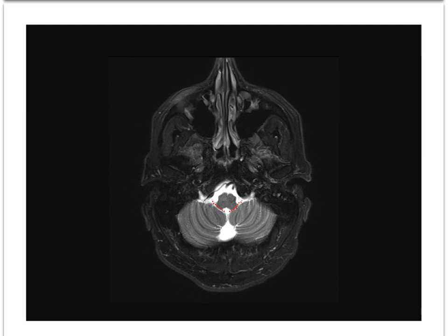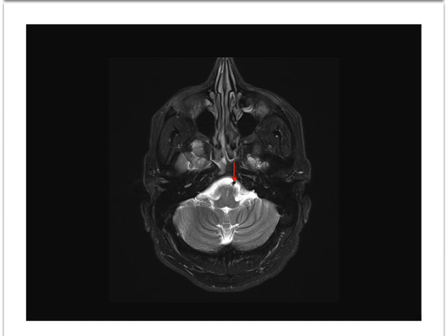Outlets of the 4th ventricle are the bilateral foramina of Luschka — think L for lateral — and the midline foramen of Magendie — think M for midline. By this level, the vertebral arteries have converged and formed the basilar trunk. There is some elongation at the posterolateral medulla indicating the level of the inferior cerebellar peduncles, also known as the restiform bodies.